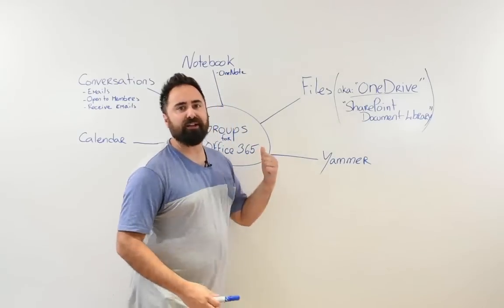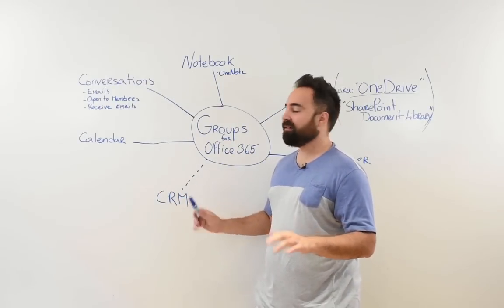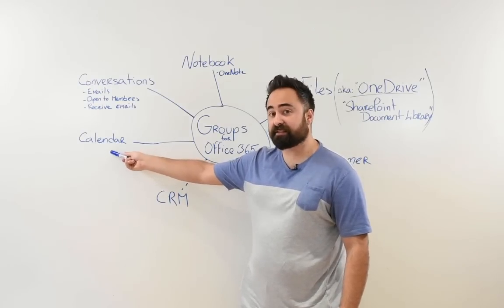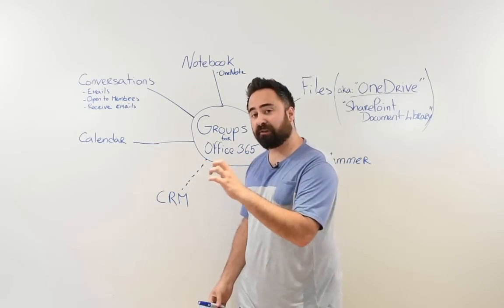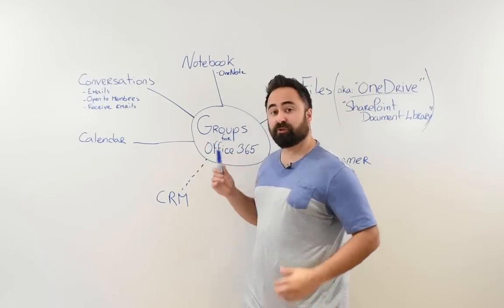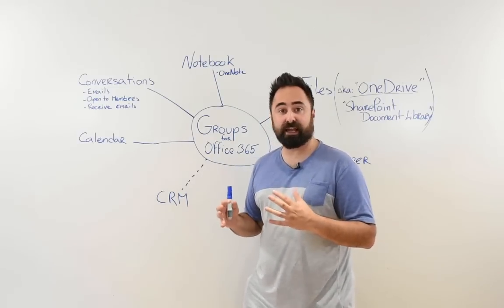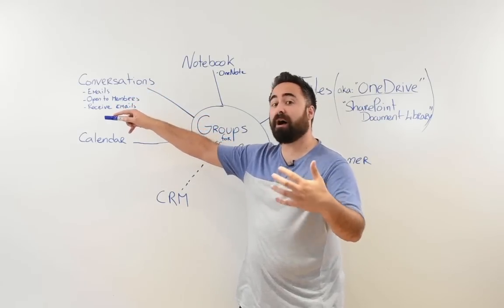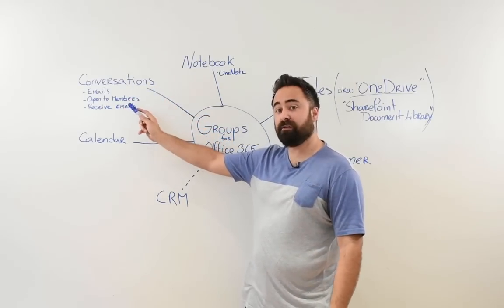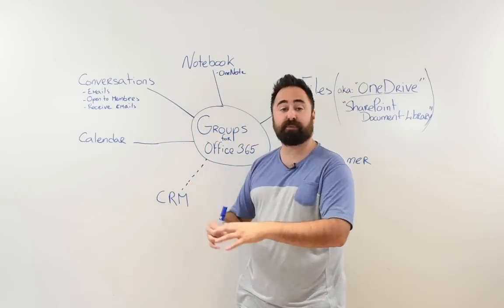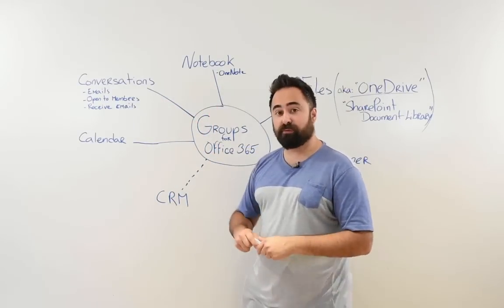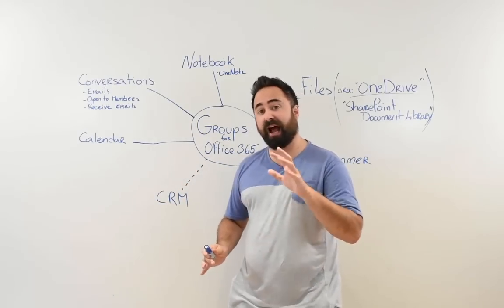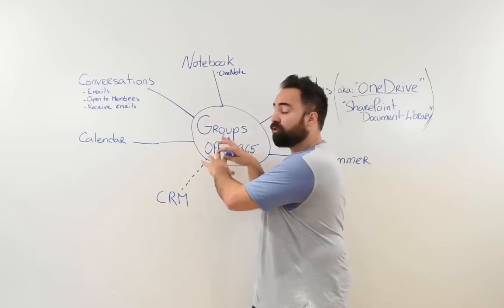Next, you get a calendar — and that is one of the biggest pieces. The calendar is an Outlook calendar, but it belongs to the group. So the blog team here at ShareGate has conversations between members. If we're dealing with someone from the press or outside the organization, we can give them an email so they can participate in open emails. We have a notebook for sharing topic ideas. And we also get a calendar which belongs to the group itself, not to a particular person.